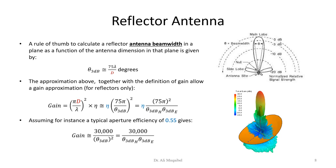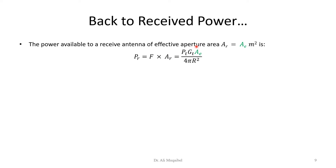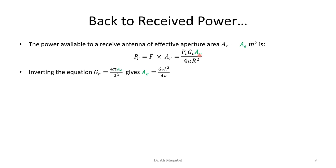Getting back to our link budget equation: the power available at the receiver antenna aperture effective area A_e is given by the following equation. The receiver A sub R is the receiver antenna area; what matters is effective area, not just physical area. The equation has P_T times G_T on the transmitter side. The effective area equals G_R times λ² over 4π in terms of the antenna gain.